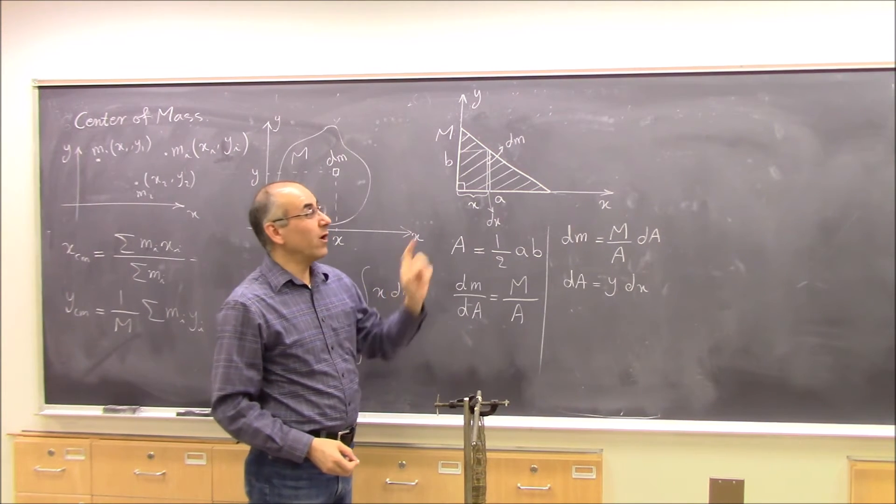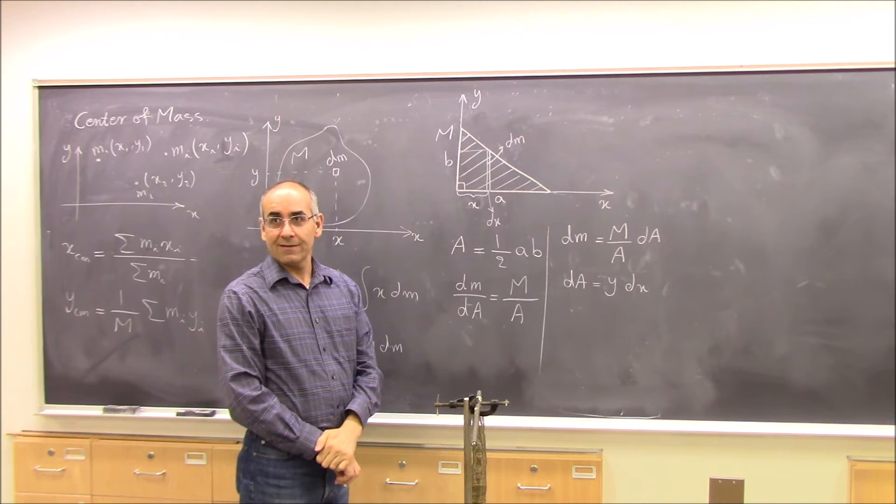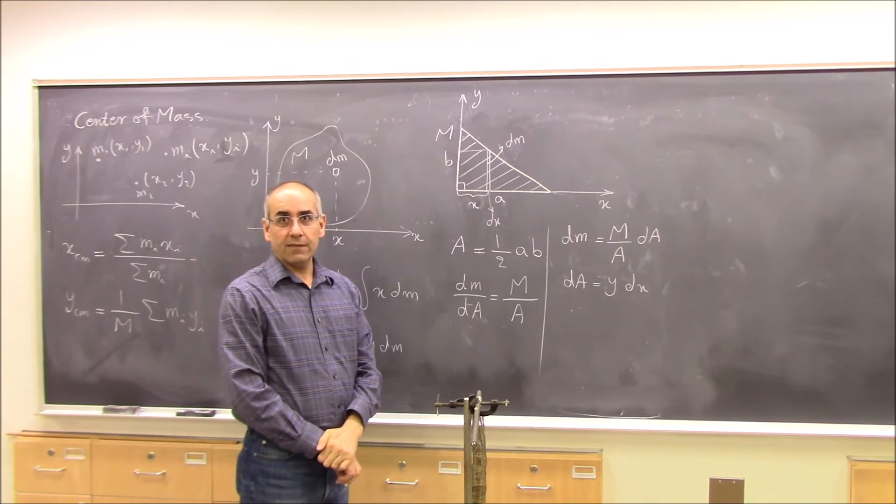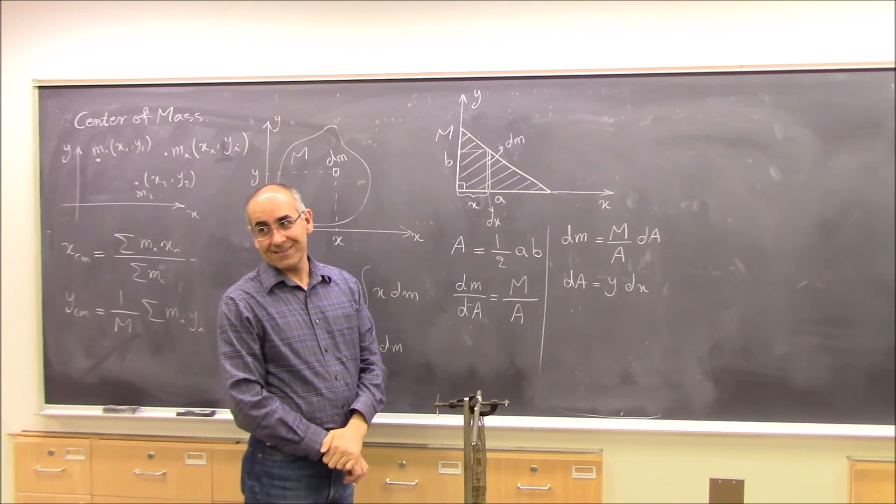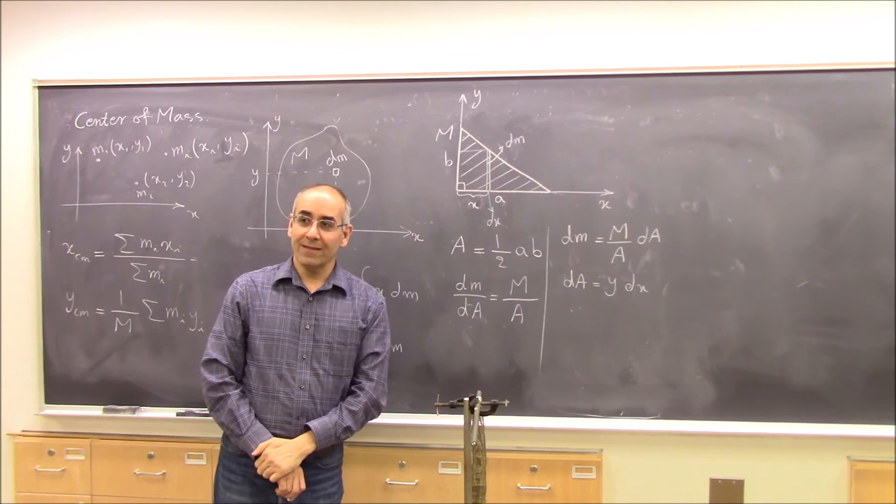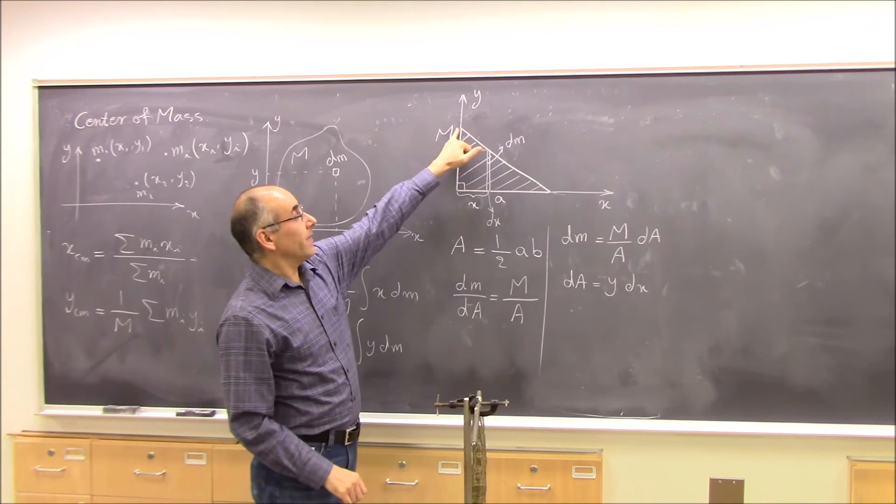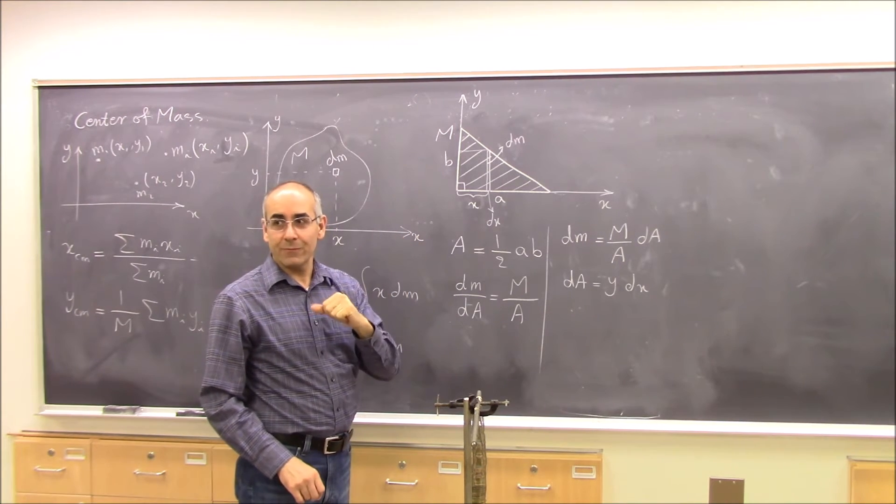Can you write y in terms of x? Is it negative b over a? Negative b over a times x? Yeah. How do you get negative b over a? Just the slope of that thing. The slope, yeah. But you have a slope and intercept. Right. Plus b. Yes, plus b.